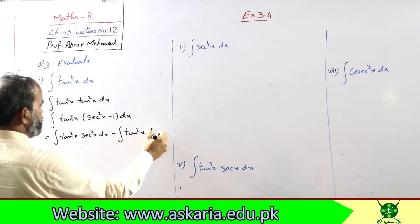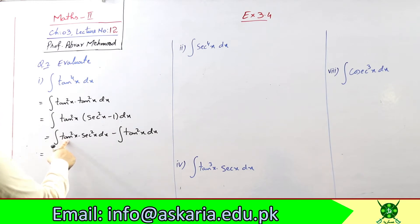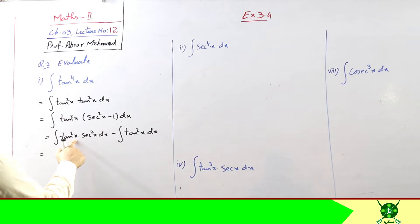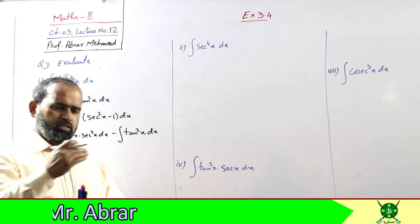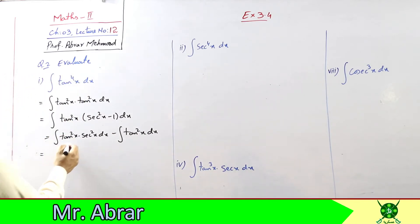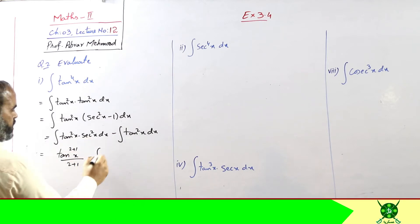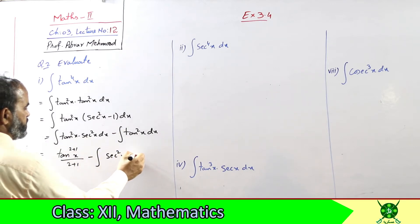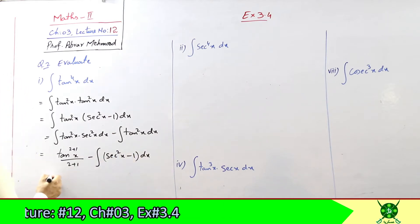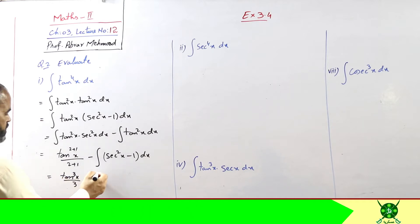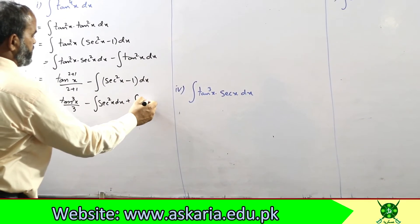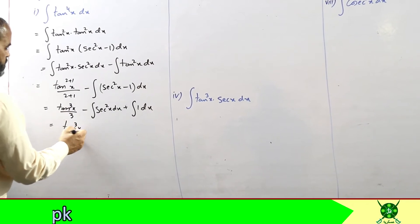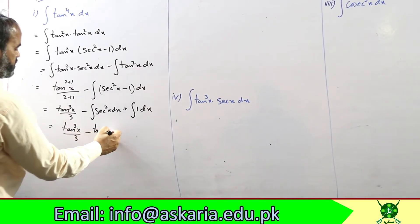यहां देखें कि tan base में है और उसकी power 2 है, और base का derivative sec²(x) उसके साथ multiply हो रहा है। मैंने बताया हुआ है कि किसी भी function की power में 1 plus होगा जब base का derivative उसके साथ मौजूद है। तो tan की power में 1 add कर दोगे। बाकी tan²(x) अकेला आगे - उस पर identity use करेंगे sec²(x) minus 1। यह आगा tan³(x)/3, फिर sec²(x) अलग करें minus, और 1 की integration अलग करें।